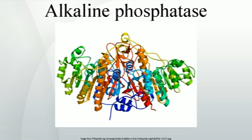Alkaline phosphatase is a hydrolase enzyme responsible for removing phosphate groups from many types of molecules, including nucleotides, proteins, and alkaloids. The process of removing the phosphate group is called dephosphorylation. As the name suggests, alkaline phosphatase is most effective in an alkaline environment. It is sometimes used synonymously as basic phosphatase.